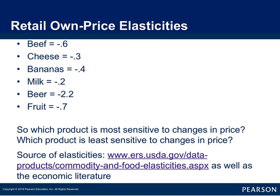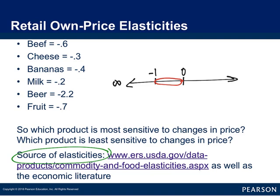This is a short list of agricultural products, and you can certainly investigate more elasticities at this website. As we look at beef, cheese, bananas, milk, and fruit, they are all less than negative one, so on our number line they fall in the inelastic area — therefore they are inelastic products. Looking across the PowerPoint, the question is: which product is the most sensitive or the most inelastic, and which product is the least sensitive or the most elastic?